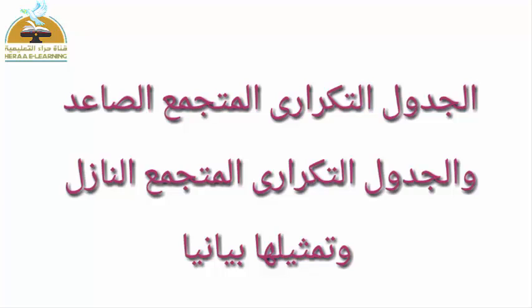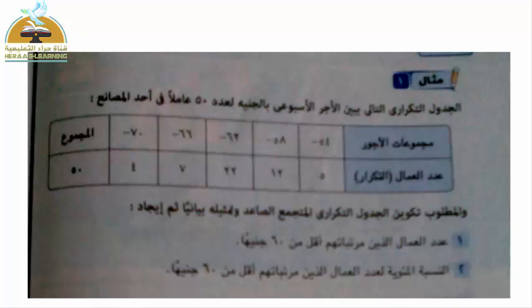The next lesson is forming the ascending and descending cumulative frequency table and representing it graphically. Given an example with a table of workers' wages, the frequency is the number of workers in each group. We are required to build an ascending cumulative frequency table and represent it graphically, and also a descending one with graphical representation.